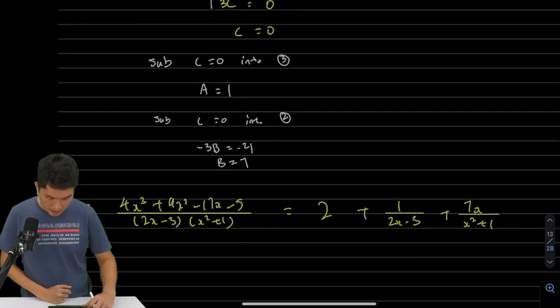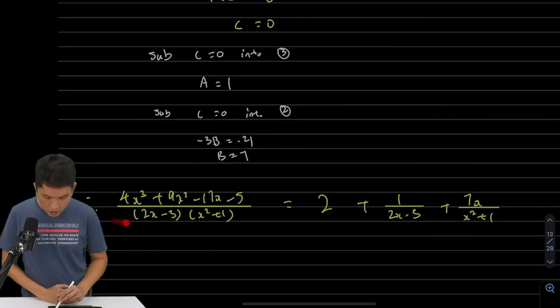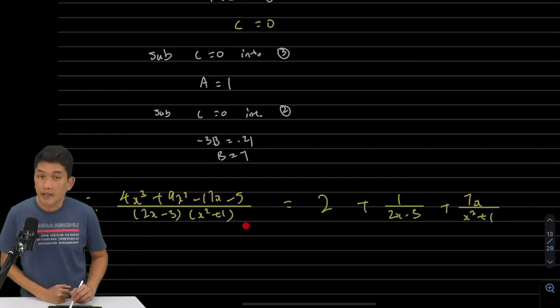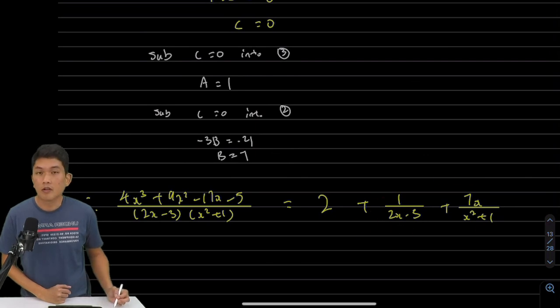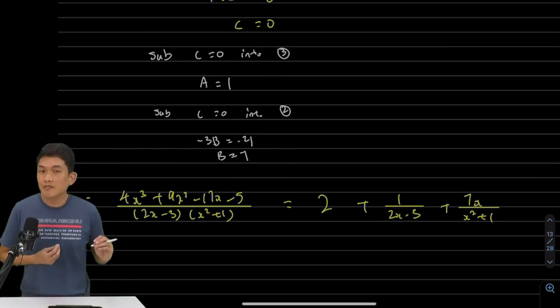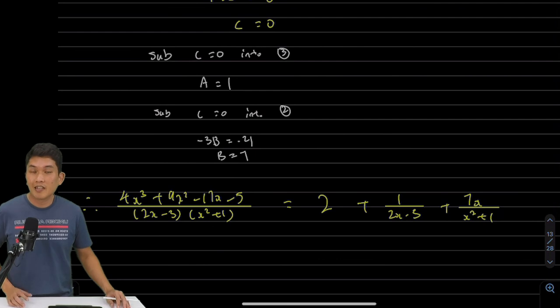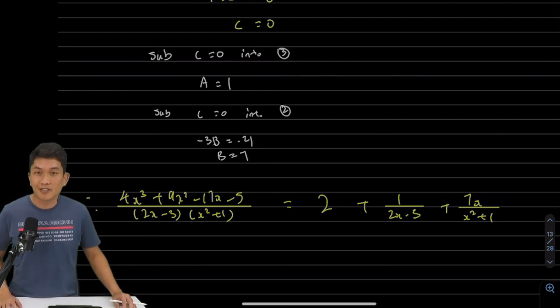And finally, to wrap it all up, let's write down the original first improper rational function we're given. That can be written as 2 plus 2 separate broken down proper rational functions. And that is the answer for question 6, part 1. Alright, I'll see you in part 2 and part 3 in another video. Cheers!